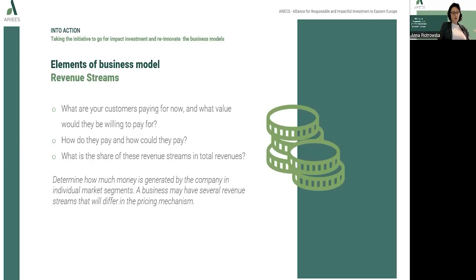How will we communicate with the customer and sell them our goods? For example, through on-premises sales, online sales, or by use of all available channels. As for customer relations, this is the area that deals with the characteristics of the relationships we establish with our customers while communicating value propositions. It can be a very personal relationship or, for example, a fully automated service. Our company should be clear about the type of relationship we want to have with our customers.